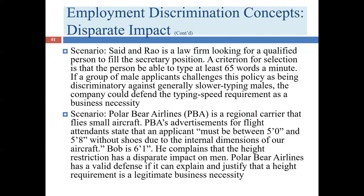In another case, a regional airline requires that candidates be at least five feet but under five feet eight. As you can see, this tends to favor female candidates — almost all females are five-eight or shorter, but probably at least half of all males would be over five-eight, giving it a disparate impact on males. Bob is significantly taller and says this has a disparate impact on him. It's possible the airline could successfully defend it by pointing to the fact that its aircraft are very small and need smaller flight attendants, but it would need to prove that is a business necessity.